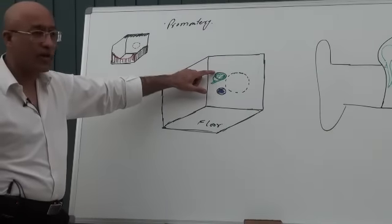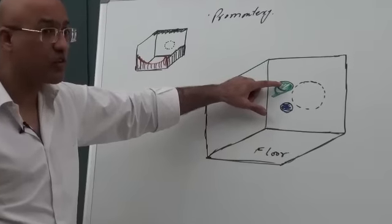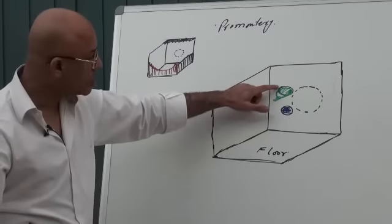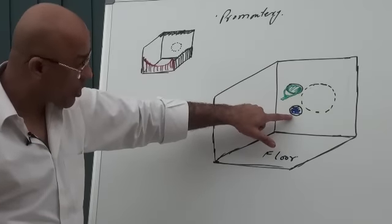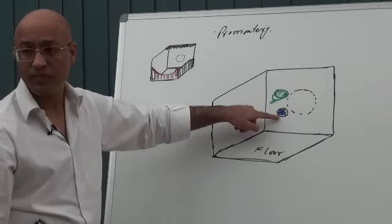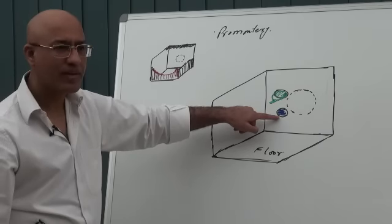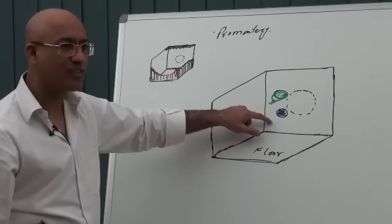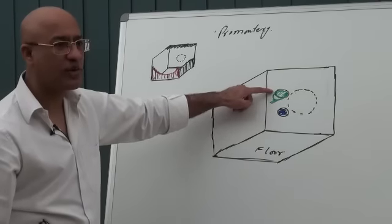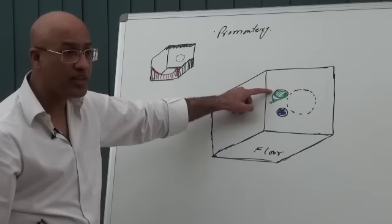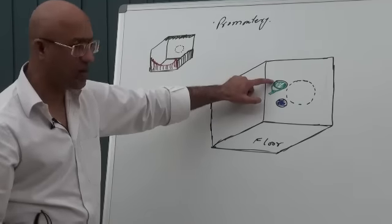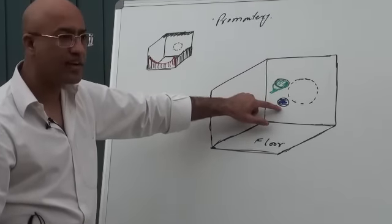This oval window is also called the vestibular window, because it opens into the scala vestibuli. This one is also called the round window, and the other name for the round window is fenestra rotunda. Likewise, the oval window can be called fenestra ovalis. The important thing is: oval window — round window. The footplate of stapes fits into the oval window, and the secondary tympanic membrane covers the round window.